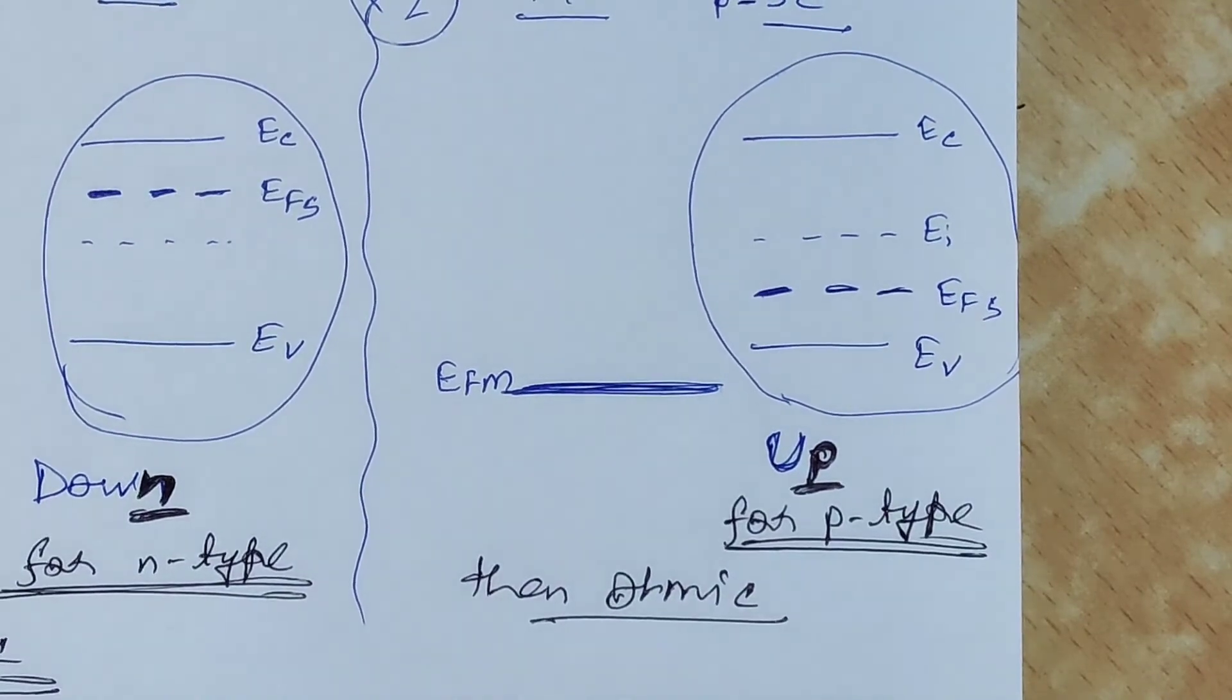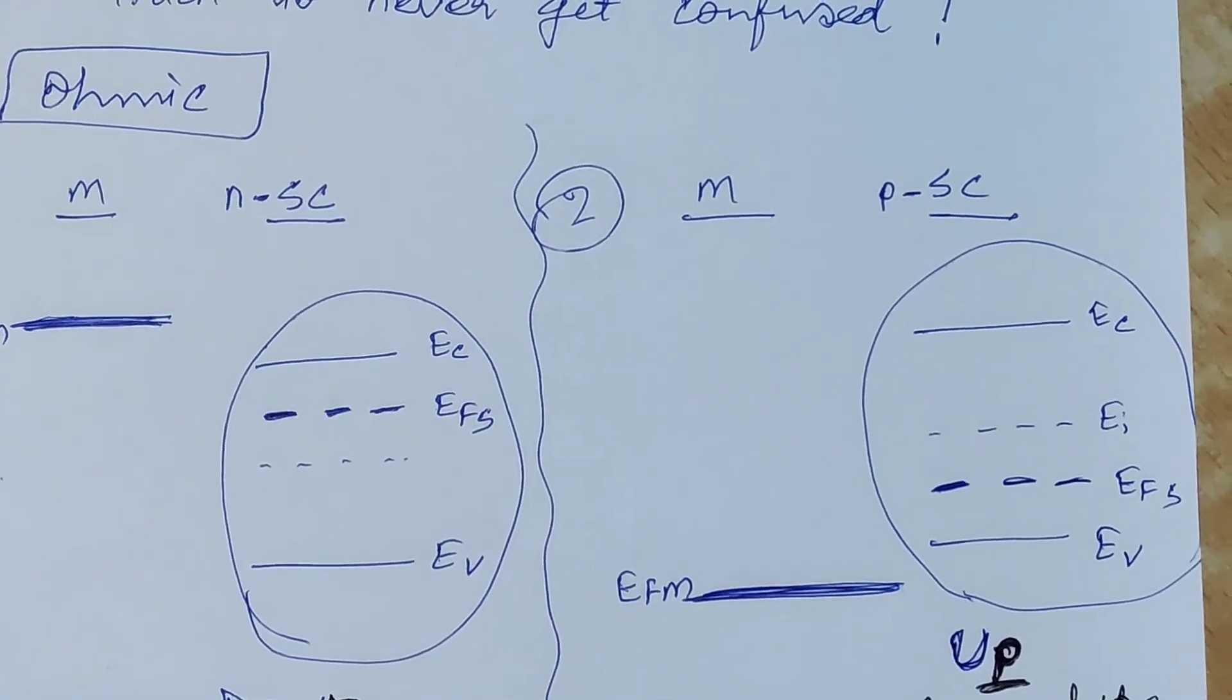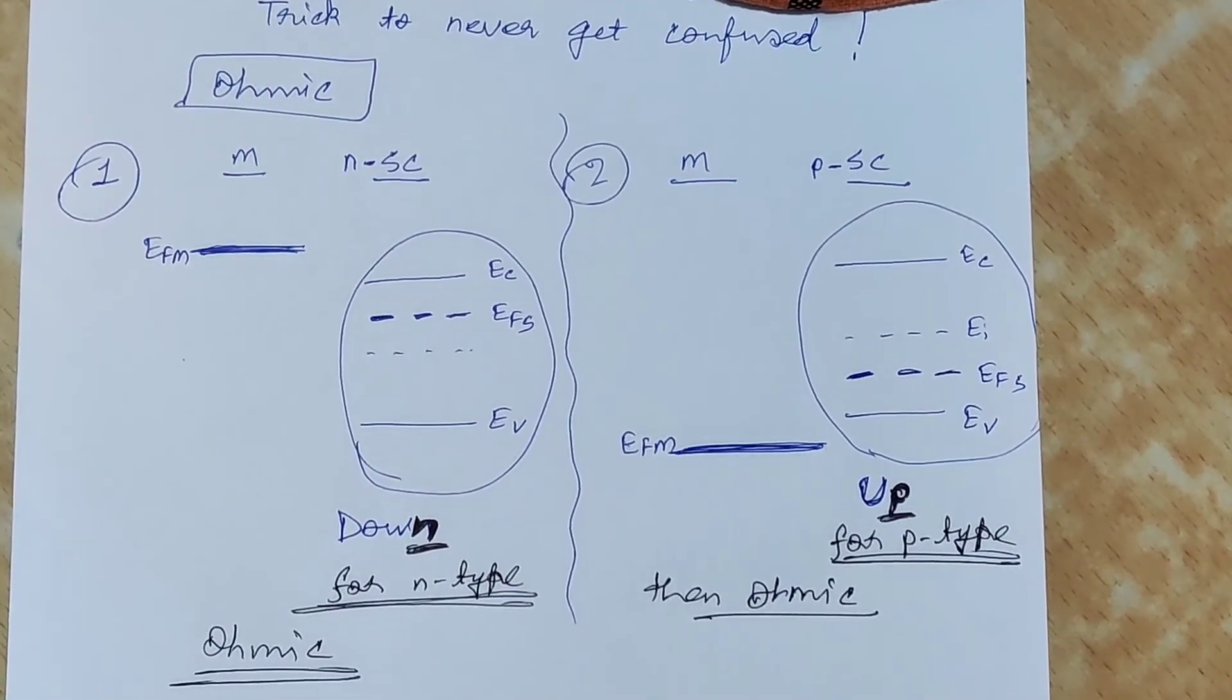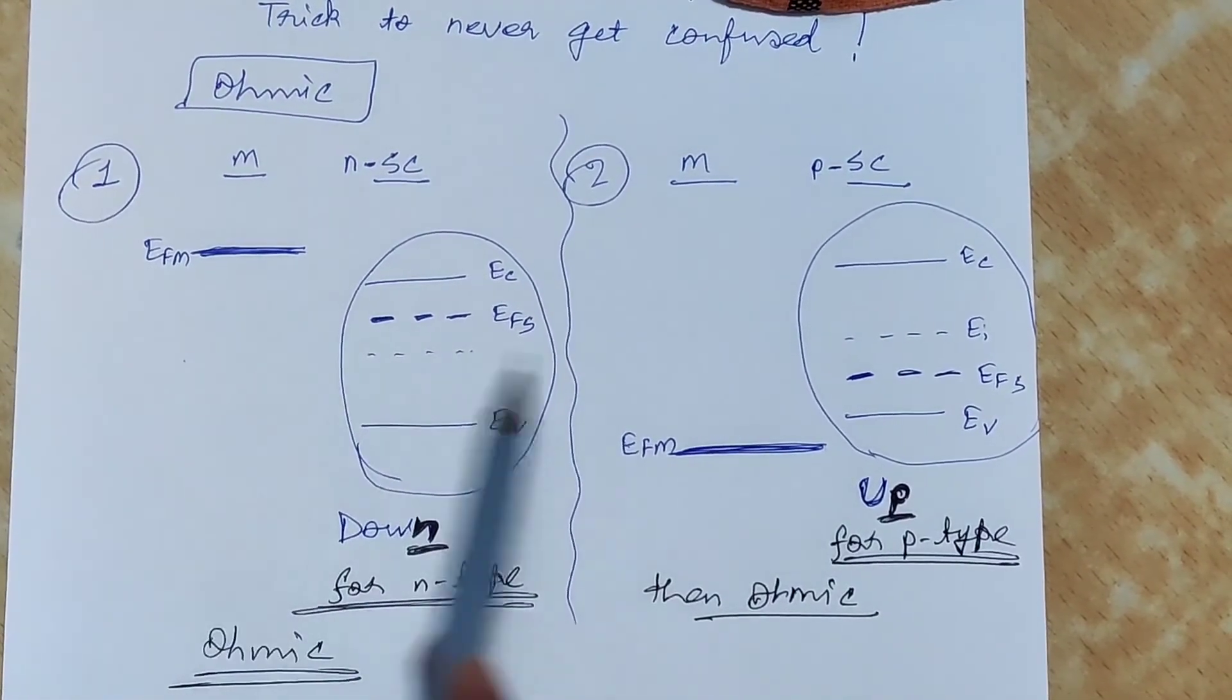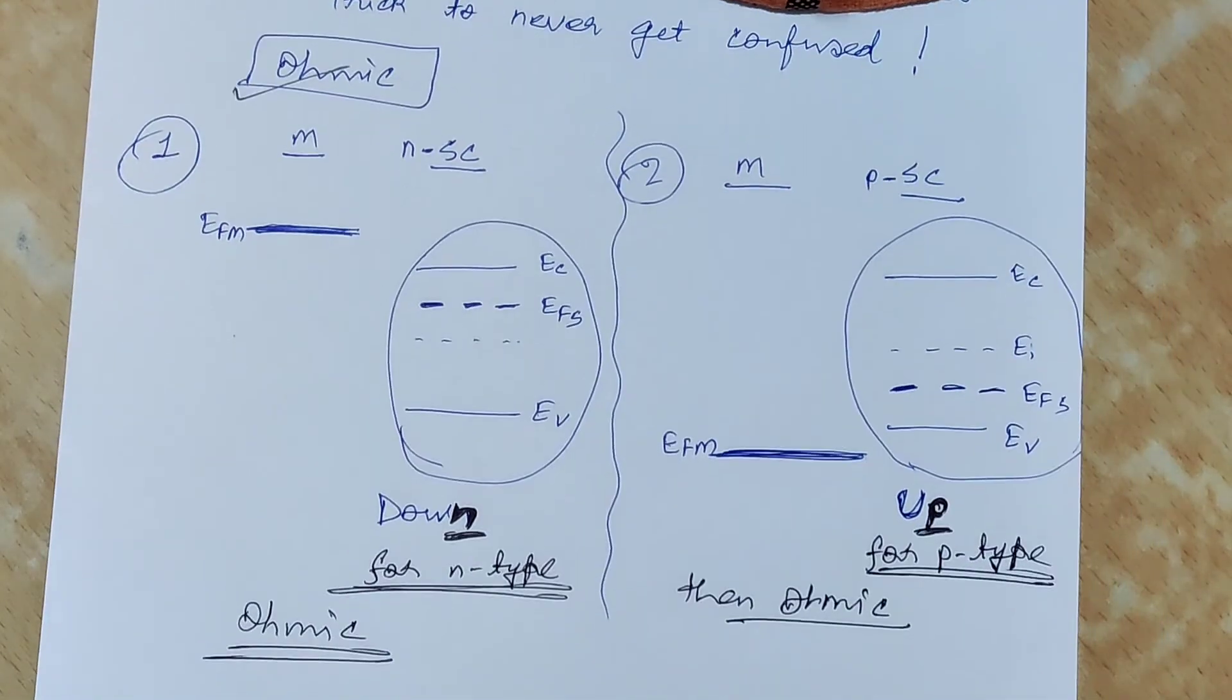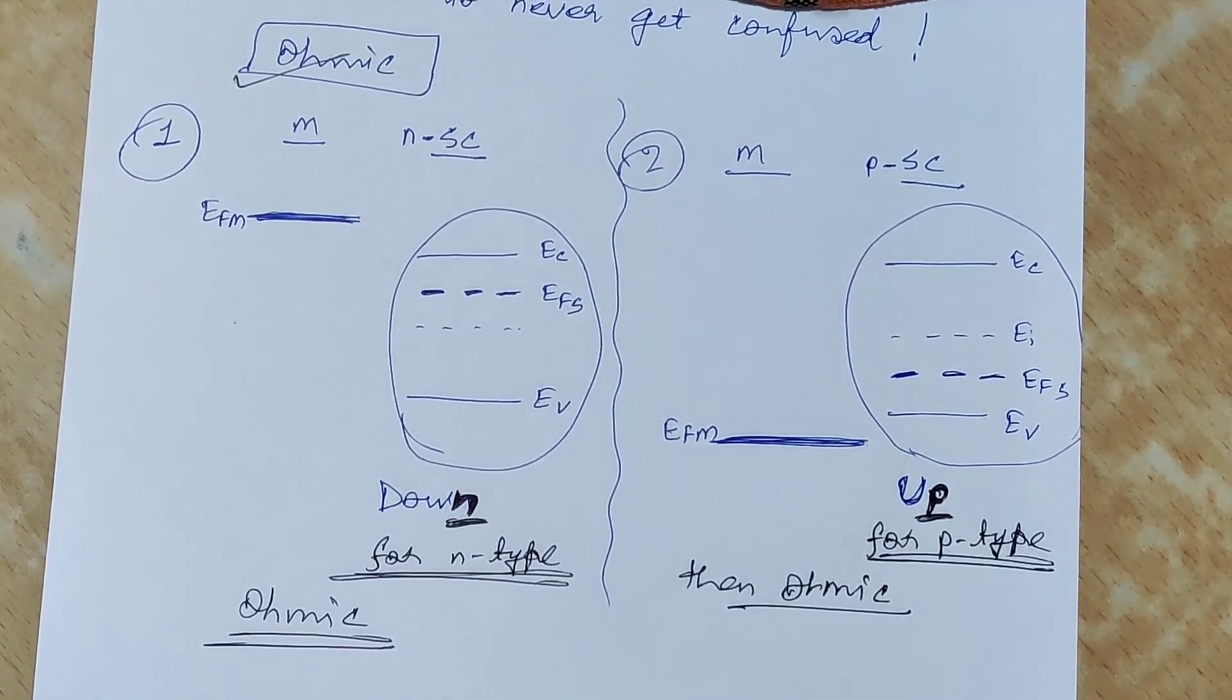So in this video I tried to present you a rather easier way of spotting this ohmic contact for both n-type and p-type semiconductors.